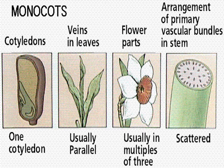Here we have the monocot: one cotyledon, veins in leaves are usually parallel, flower parts usually in multiples of three, and the arrangement of the primary vascular bundle in the stem is scattered.